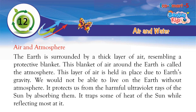Air and Atmosphere: The earth is surrounded by a thick layer of air, resembling a protective blanket. This blanket of air around the earth is called the atmosphere. This layer of air is held in place due to earth's gravity. We would not be able to live on the earth without the atmosphere. It protects us from the harmful ultraviolet rays of the sun by absorbing them, and it traps some of the heat of the sun while reflecting most of it.